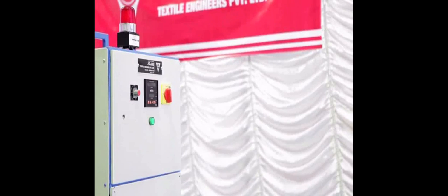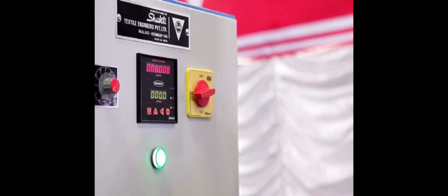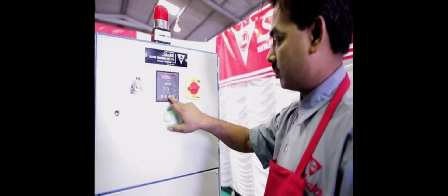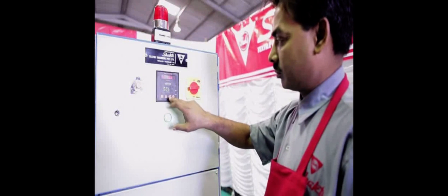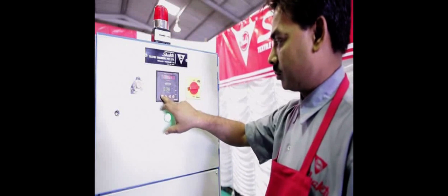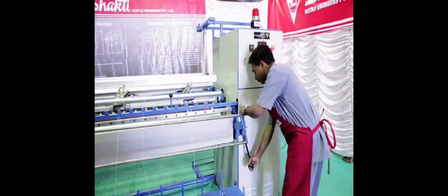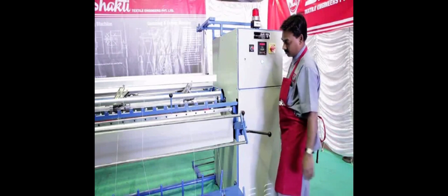To start the hank-reeling machine, first put the main switch on. Then feed data of the diameter of the cradle and the meterage required of the yarn per hank. The machine is now ready for operation.